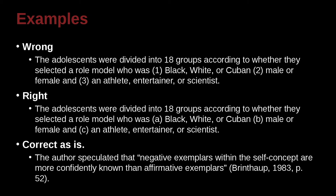We're looking at some lists, a little bit of a review. If we look at this example: 'The author speculated that negative exemplars within the self-concept are more confidently known than affirmative exemplars.' Here we have the APA style — MLA is a bit different — but what we have is the author's name, comma, the year, comma, and the page number. The key point is that whenever you quote exactly what somebody has written, you must remember to include that page number.